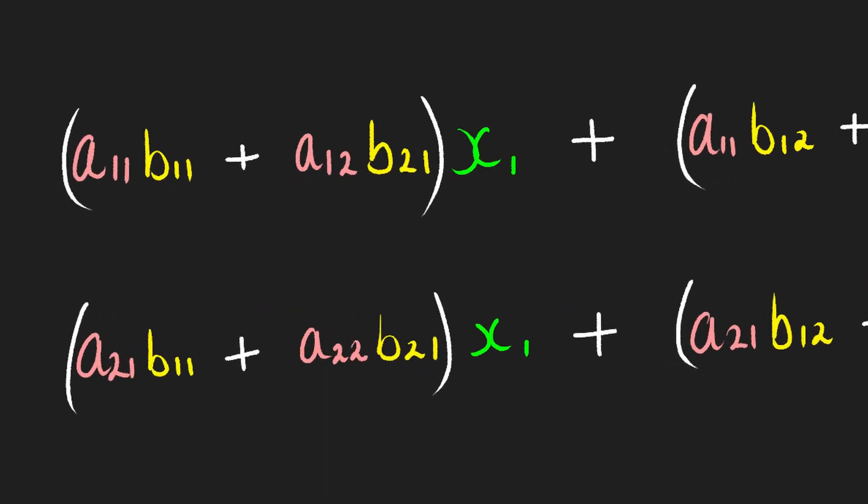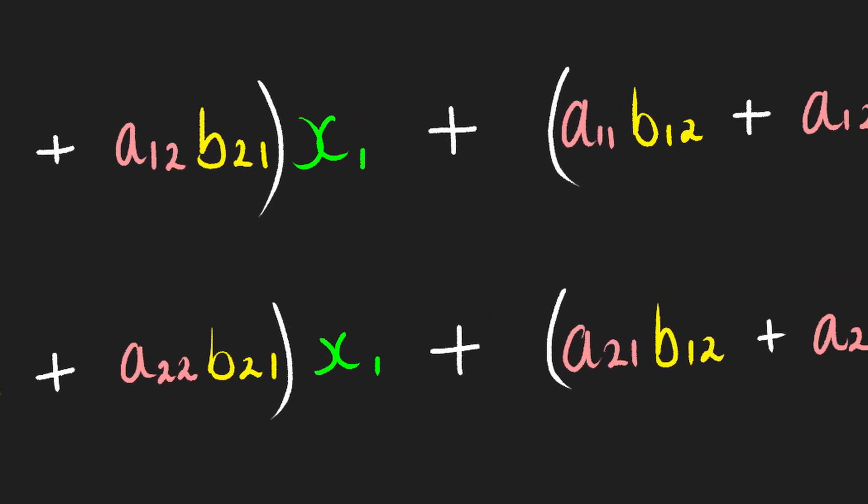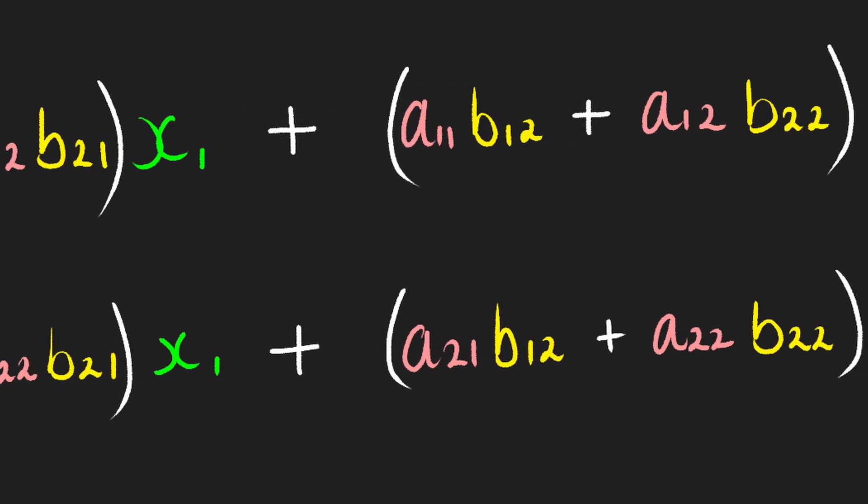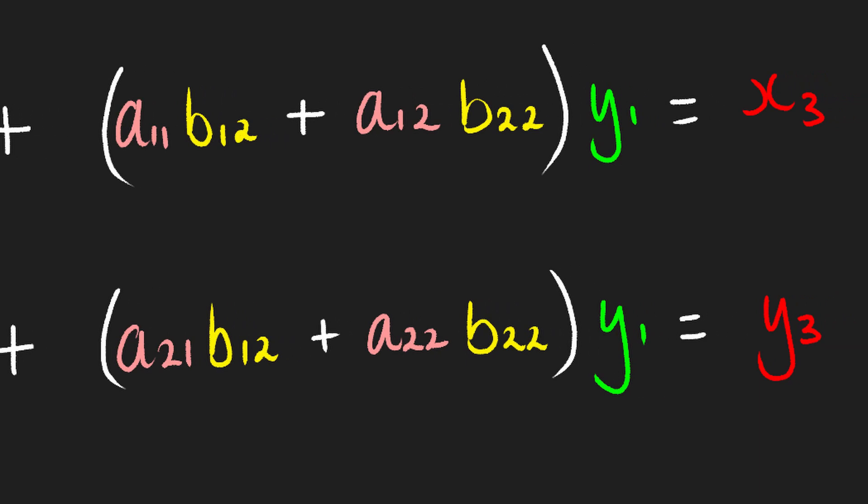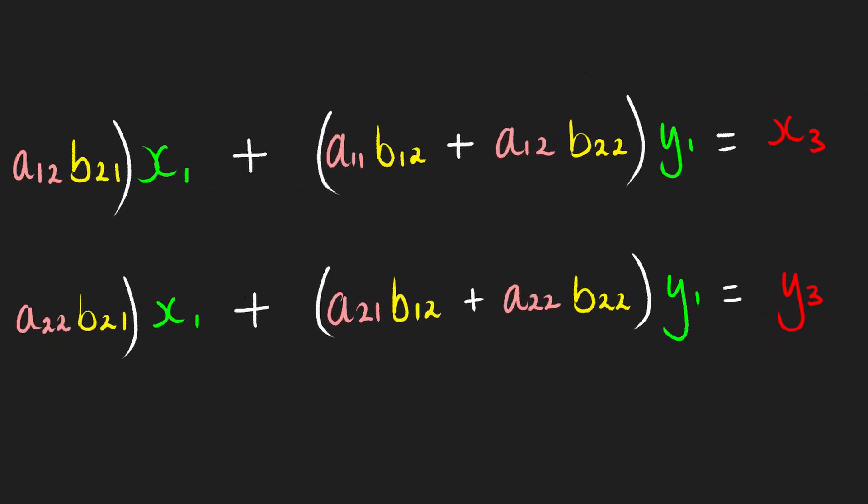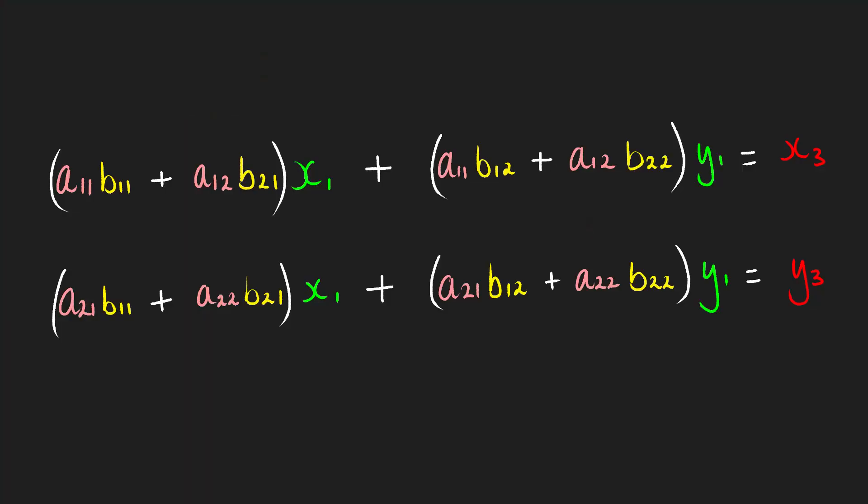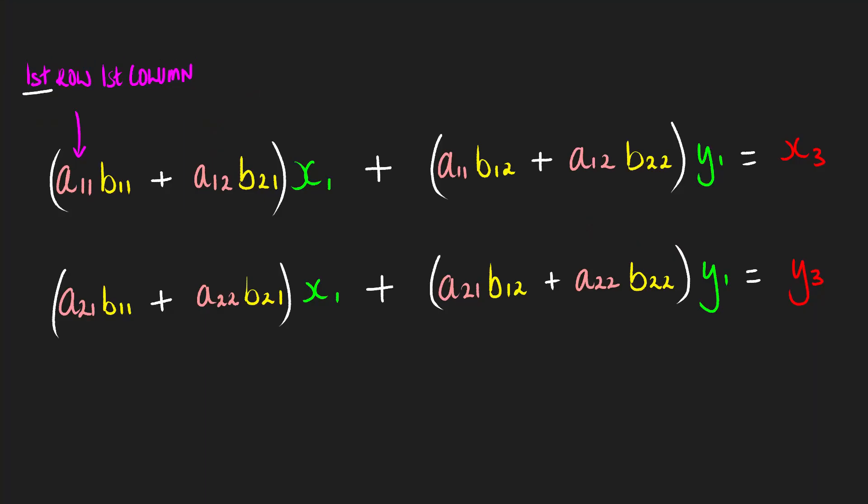And you can see that the coefficients of these x1s and y1s are a combination of the coefficients from the first transformation and the coefficients from the second transformation. Now the interesting pattern to notice here is that in the coefficients of all the x1s and y1s, the a variables have subscripts where their rows or their equations that they used to be in stays constant.